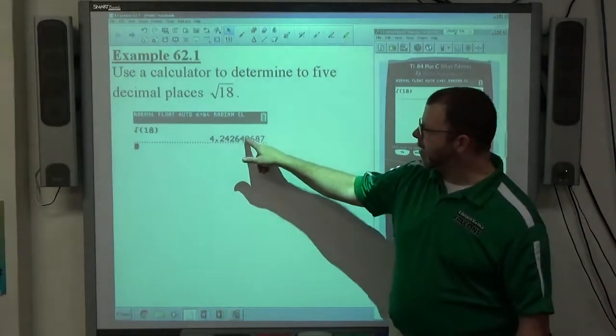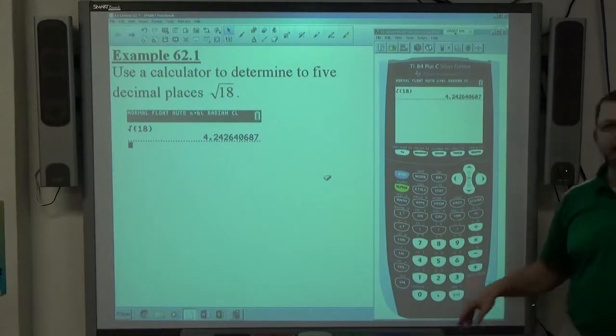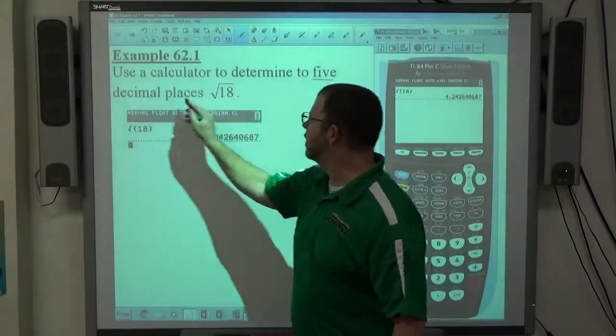Once you get your answer, 4.242640687, the job is then to round that to the right number of decimal places.